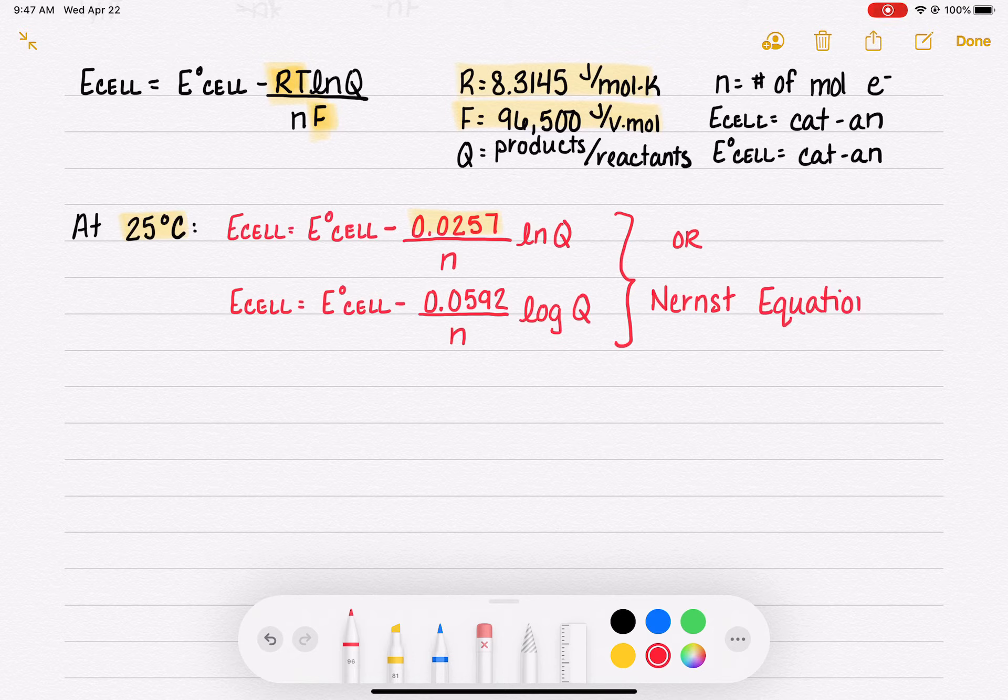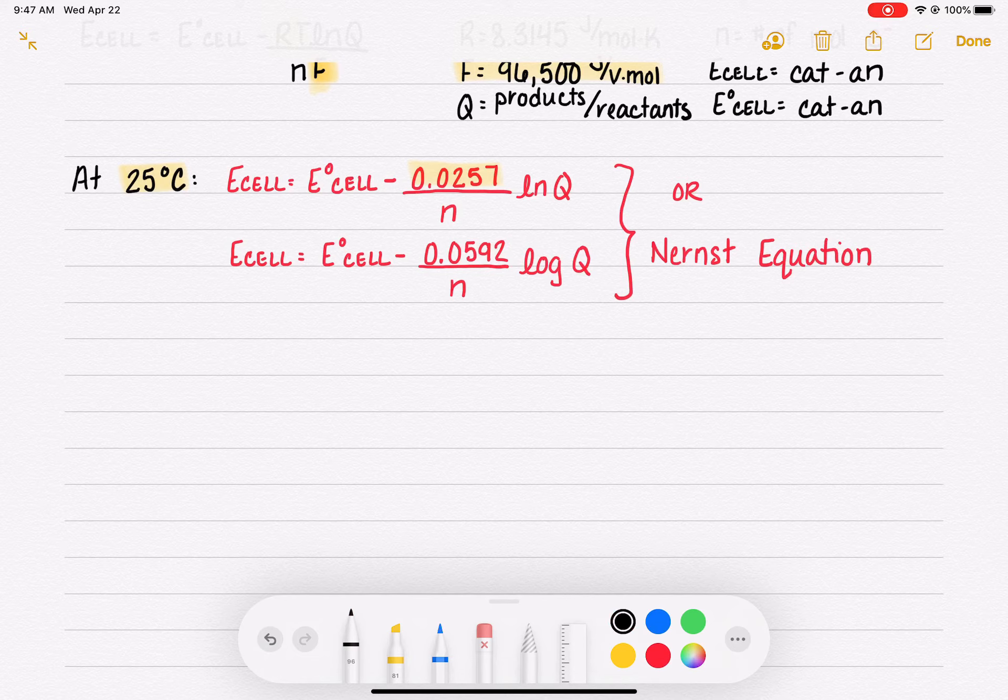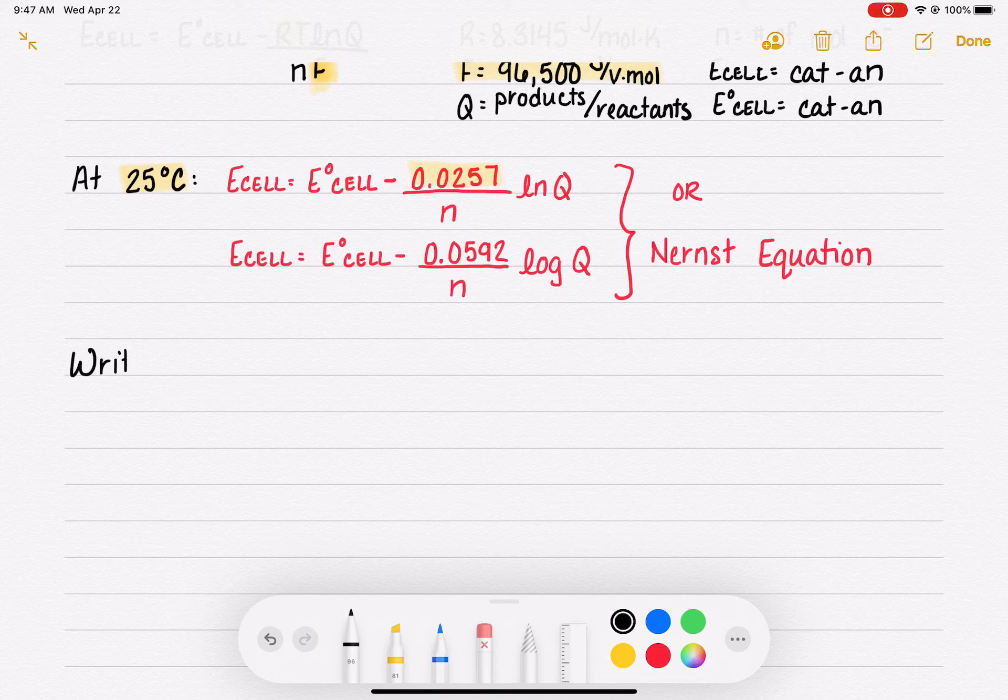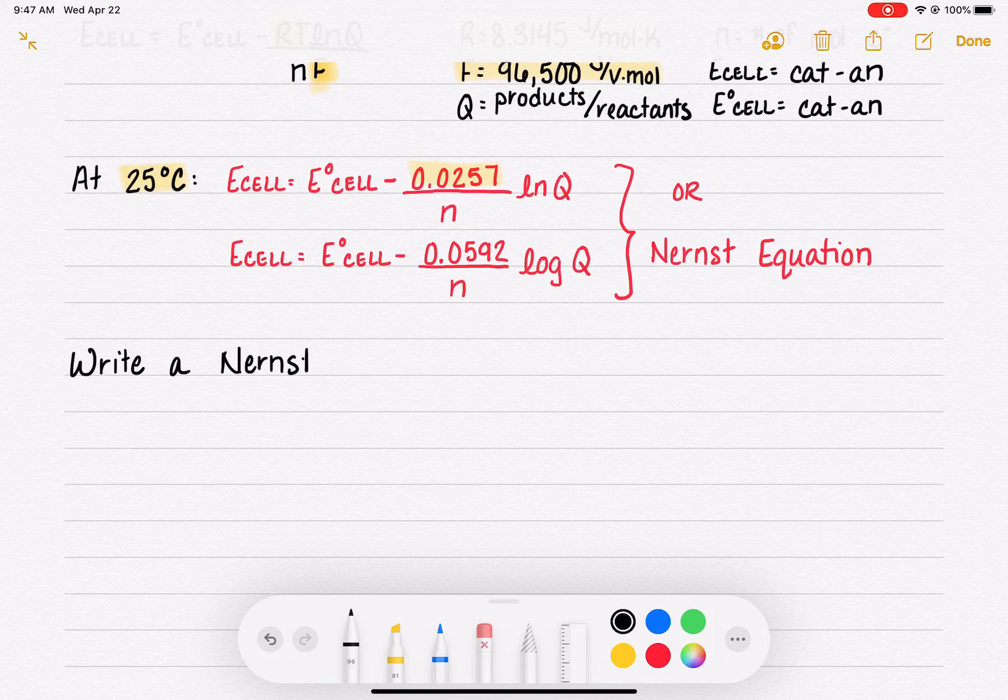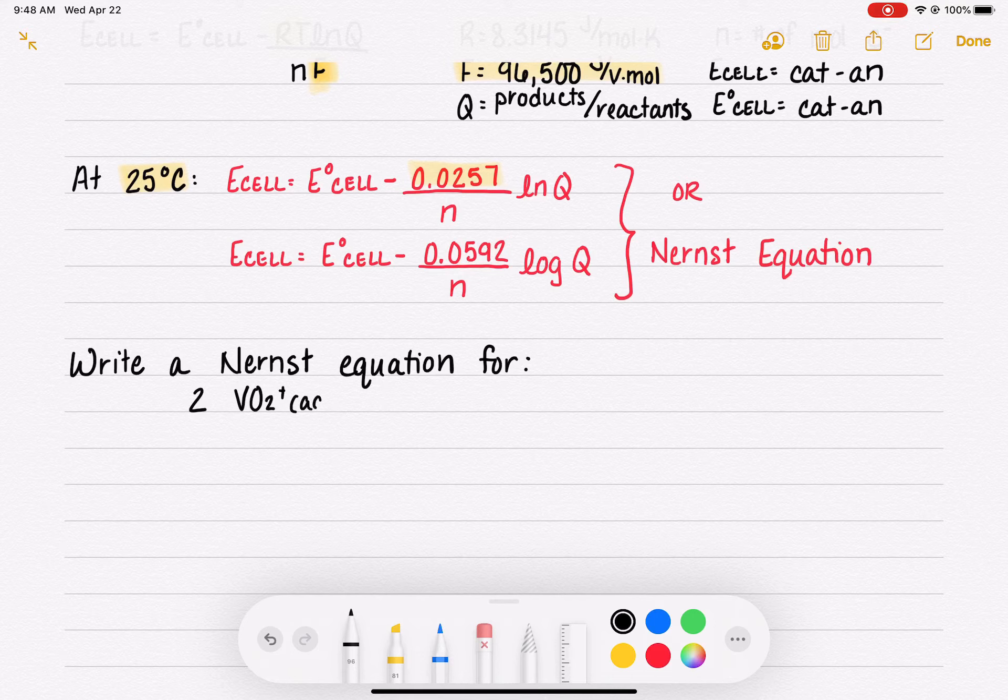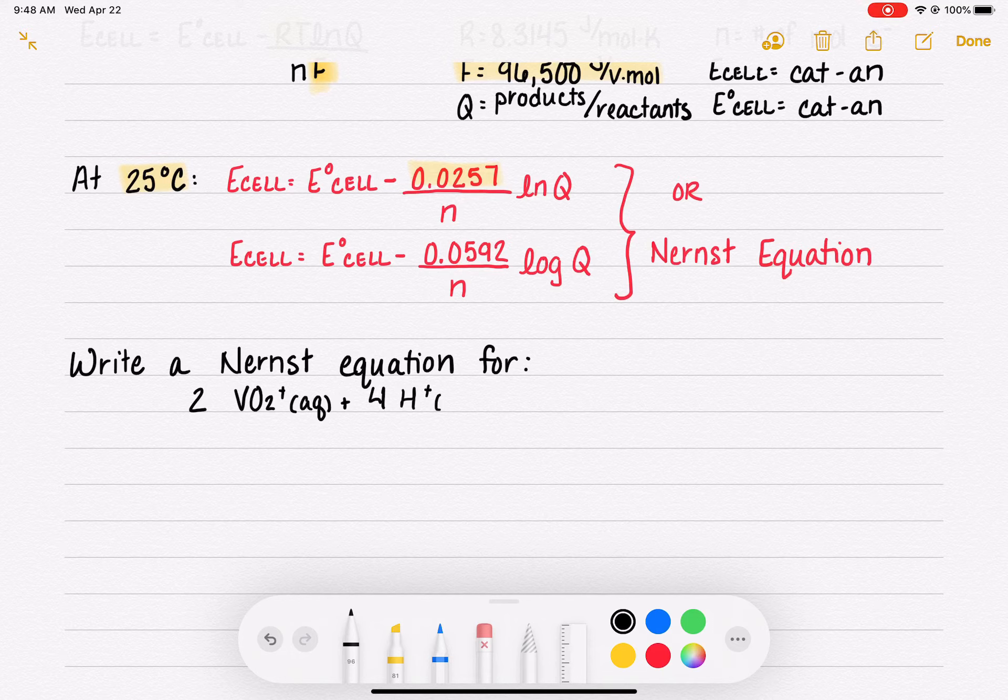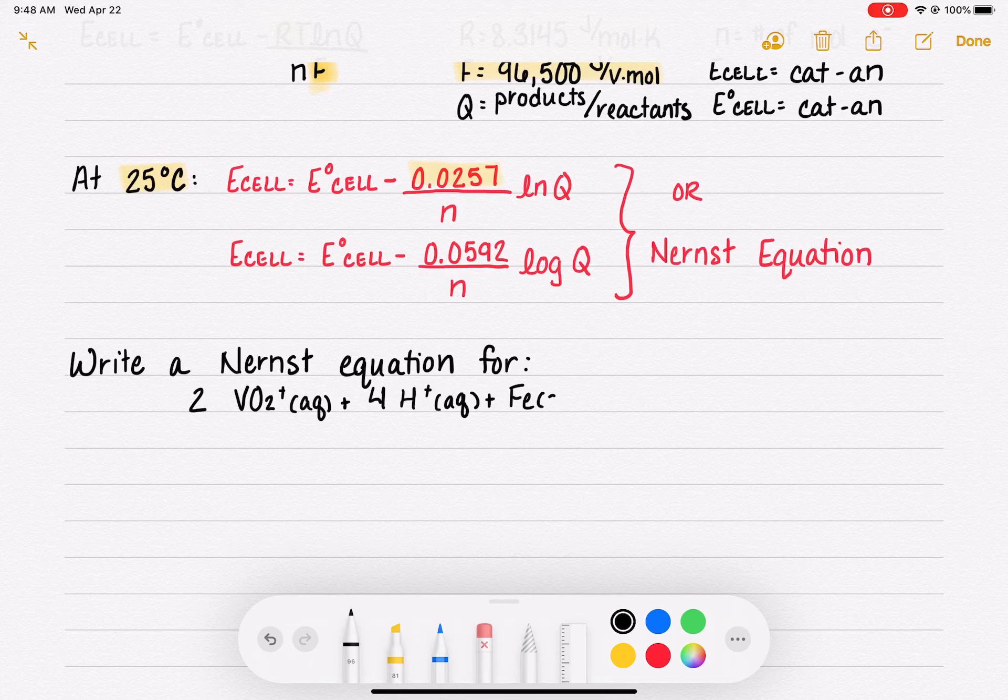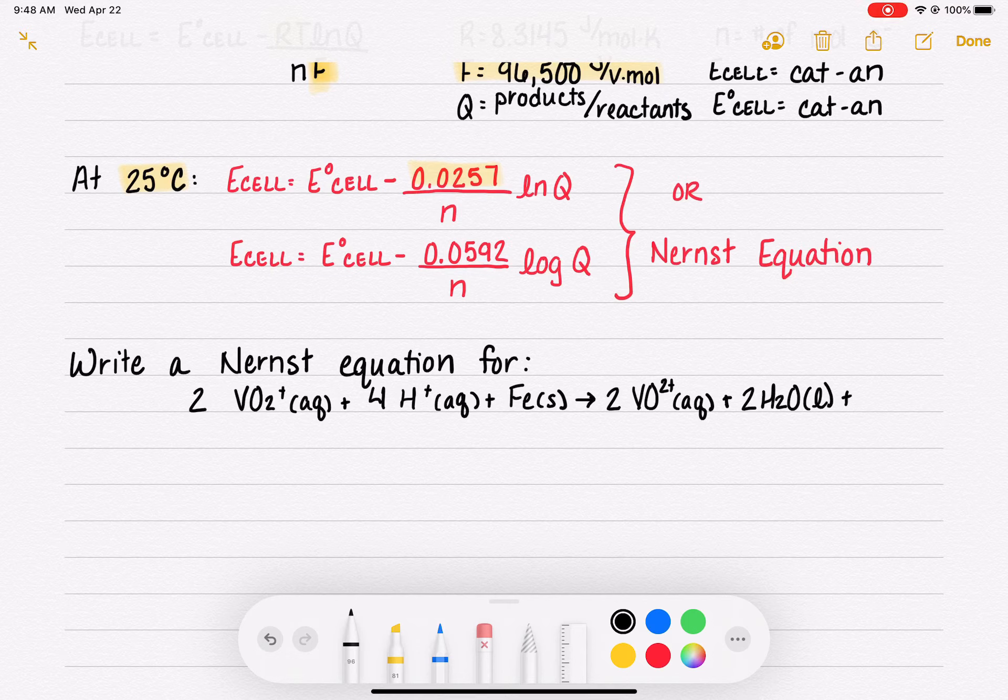These are the equations that we will use when we are working with a non-standard cell and we want to calculate the voltage of that cell. Before we practice actually using the Nernst equation, the first thing that we're going to practice is just setting it up. So we're going to write the Nernst equation for this particular redox reaction: 2VO₂⁺ aqueous plus 4H⁺ aqueous plus Fe solid, which makes 2VO²⁺ aqueous, 2H₂O liquid, and Fe²⁺ aqueous.